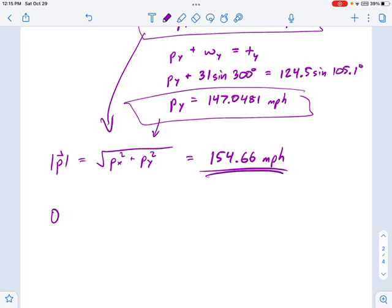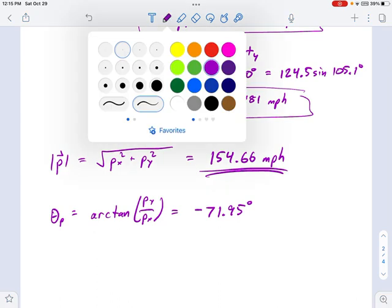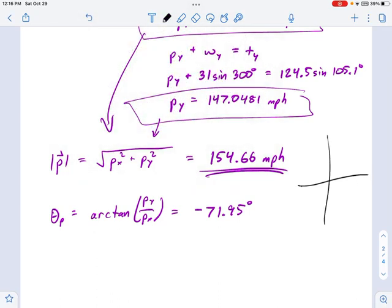Now, in terms of the direction, the direction the plane has to aim itself, this is going to be the arctan of the y component divided by the x component. Remember, you have to know whether your calculator is talking about degrees or radians. The degrees are going to be more useful for us here. What I get from my calculator is negative 71.95 degrees. Well, that's great, but think about what that means for a moment.